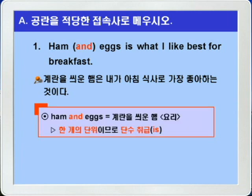햄 and eggs는 단수동사이니까 햄과 계란이 아니라 계란을 씌운 햄, 즉 하나의 요리 이름이 되겠습니다. 그래서 한 개의 단위로 단수 취급해야 한다는 것이죠. 정답: Ham and eggs is what I like best for breakfast.